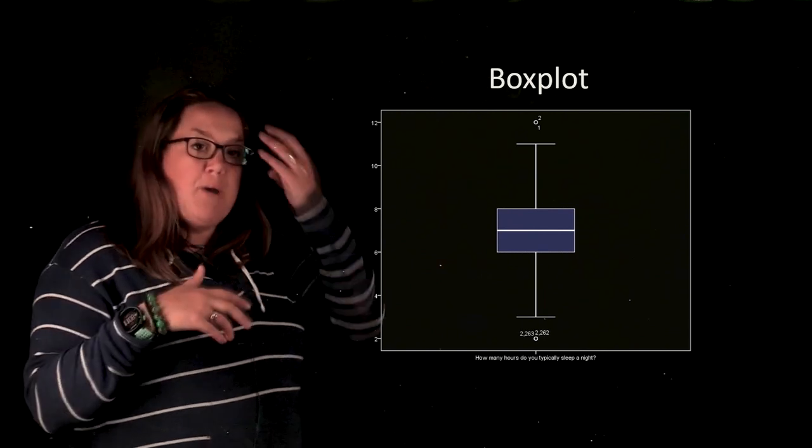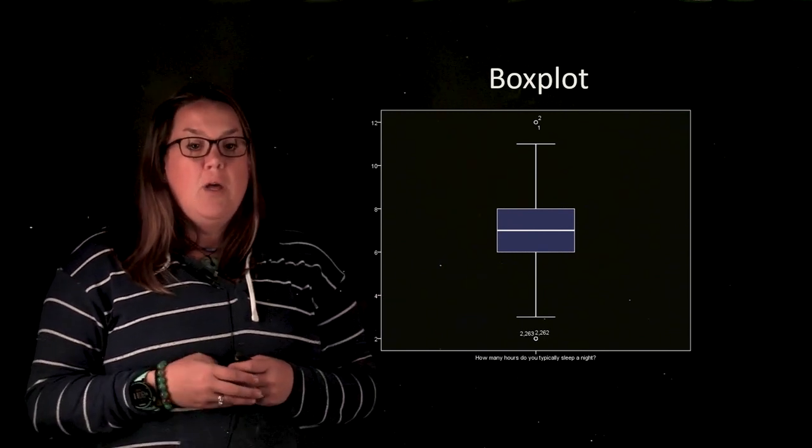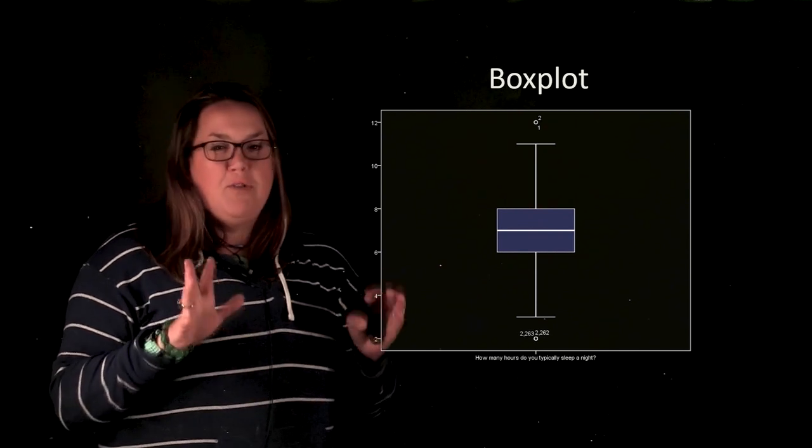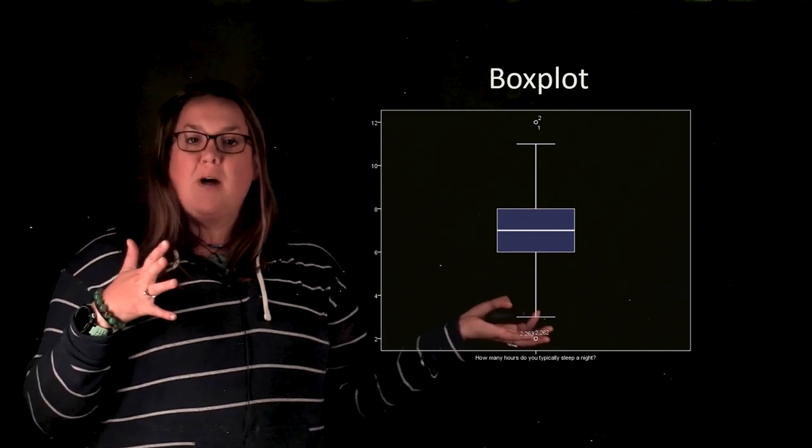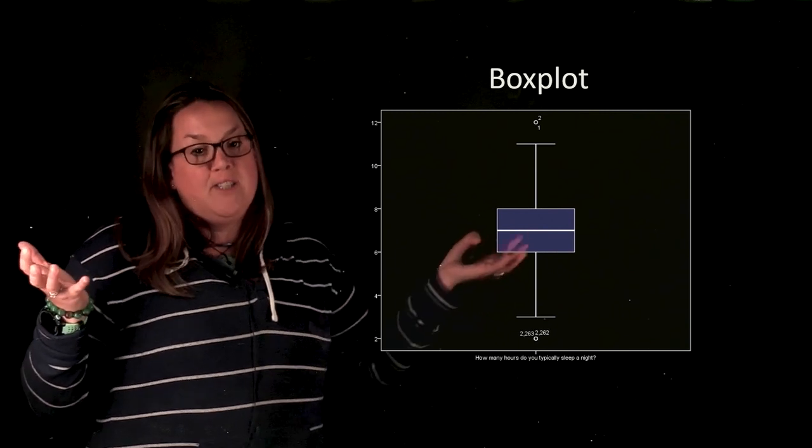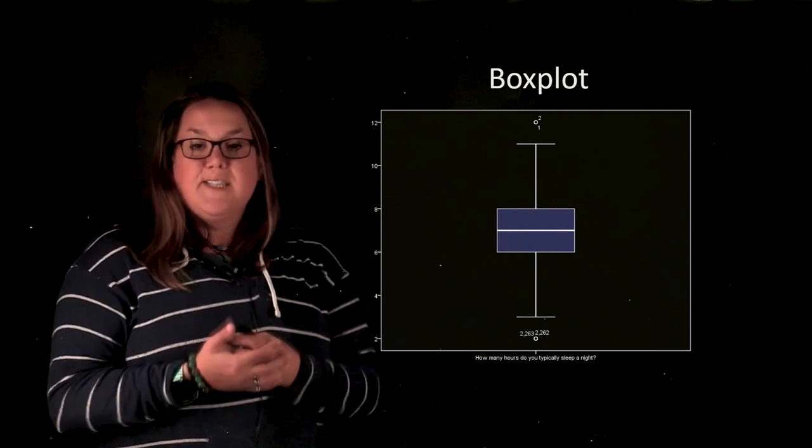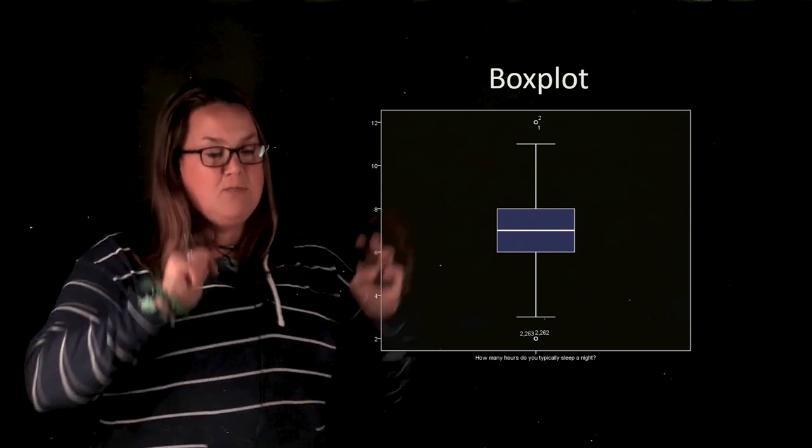So a box plot is a type of descriptive statistic for one quantitative variable. You can actually separate it with different categories, but here's just a simple box plot. Sometimes we will call it a box and whisker plot for the obvious reasons. It has a box and it has whiskers coming out, but this is essentially the same thing.